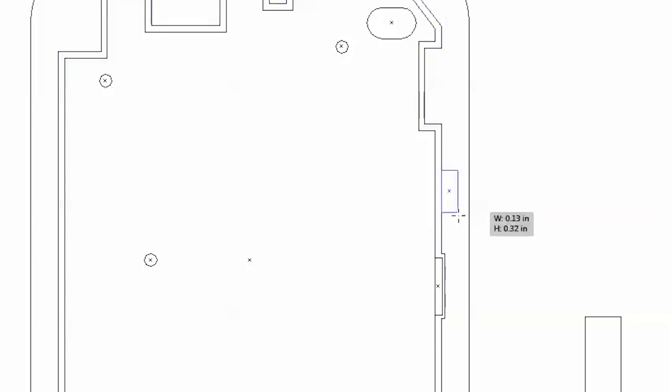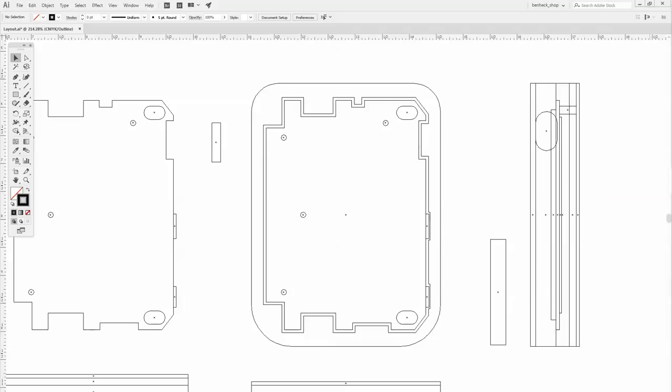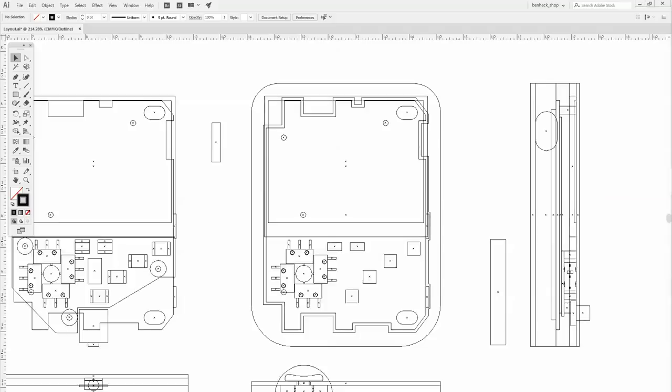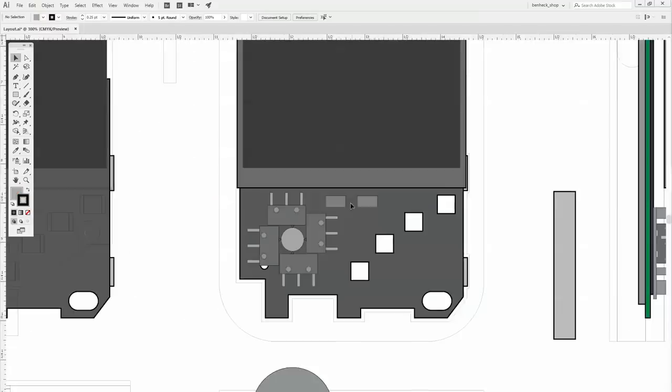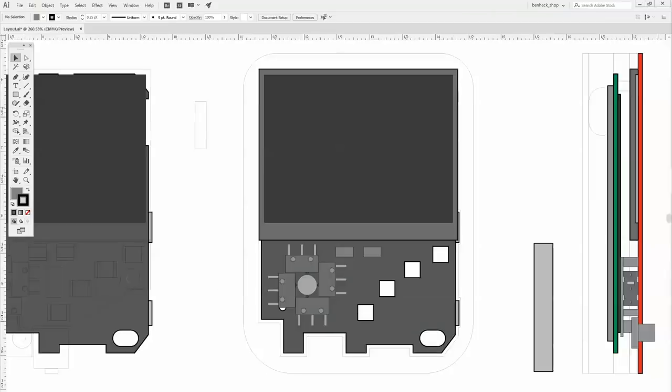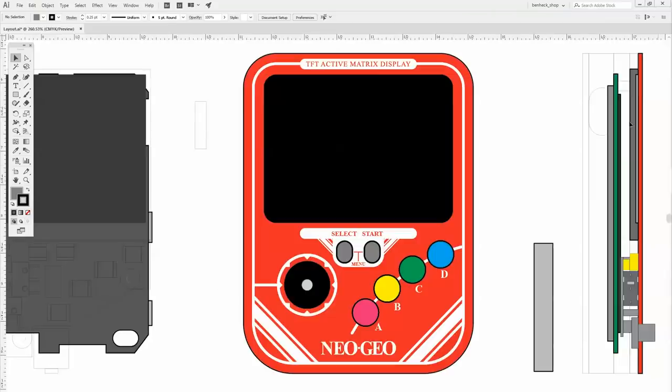This wall here will give us enough thickness for a size 2 imperial screw, which I like to use. So basically I just start adding in things like the micro switches that we were looking at earlier. We have a few surface mount tack switches here - select and start, A, B, C, D. From here we can start building up detail.